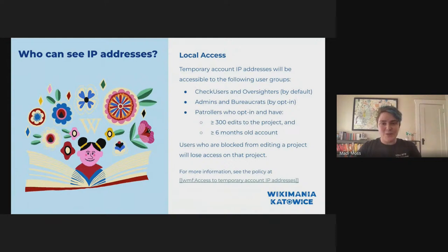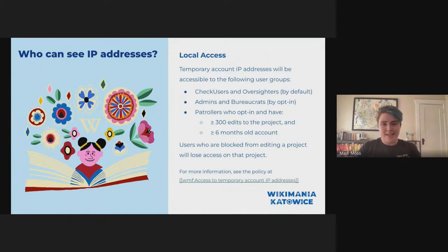Certain users will have access to these IP addresses for temporary accounts on individual or local Wikimedia projects in order to protect those projects. CheckUsers and oversighters will have local access rights by default. Admins and bureaucrats will be able to opt in for access. And for patrollers who opt in, they will also be able to access these IP addresses as long as they've made at least 300 edits to that local project and their account is at least six months old.